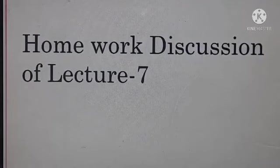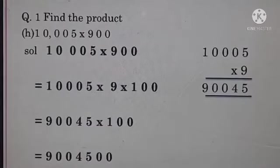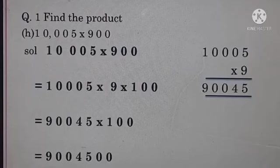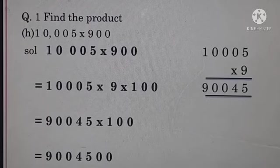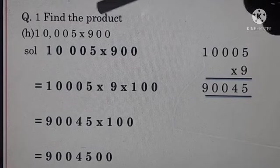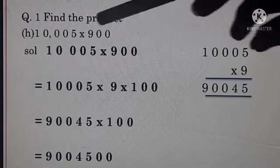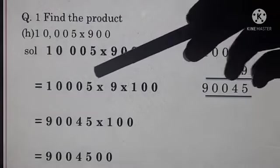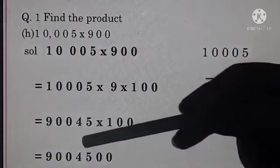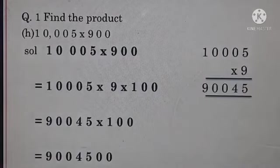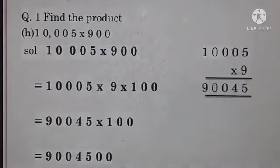Now it's time to do homework discussion, homework discussion of lecture 7. Your homework was question number 1, H, I and J parts. So open your practice notebook. Yes, very fast, take your pen or pencil in your hand. H part: the question was given to us 10,005 multiply 900. 10,005 multiply 900 will become 10,005 multiply 9 multiply 100. Then 10,005 multiply 9 equals 90,045 multiply by 100.